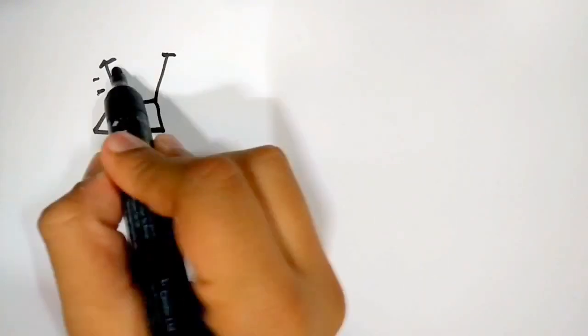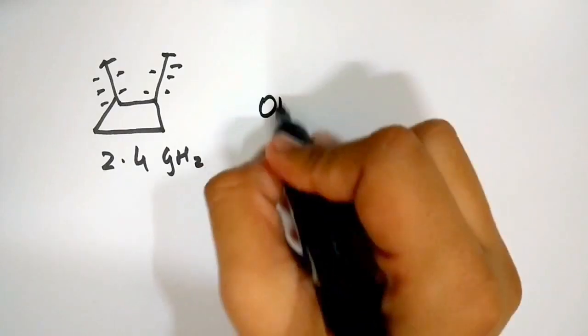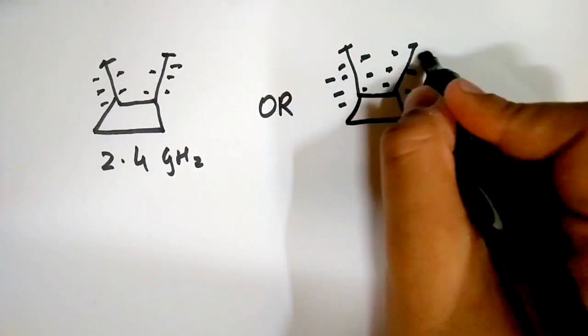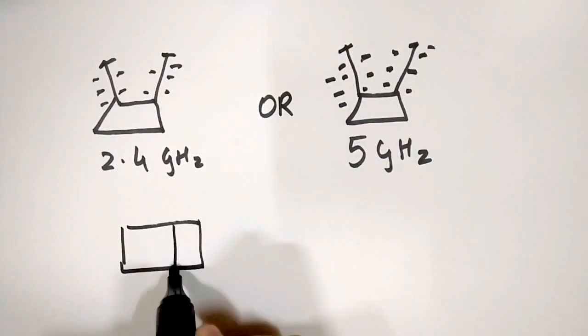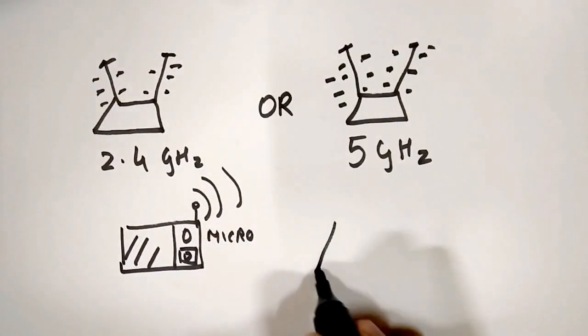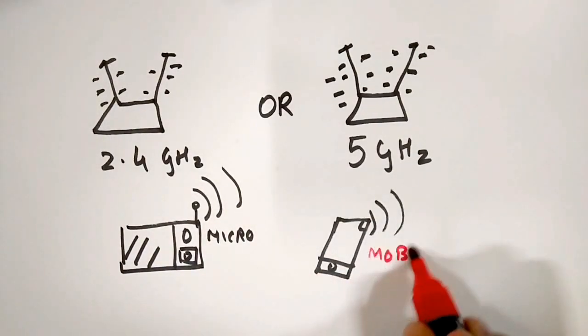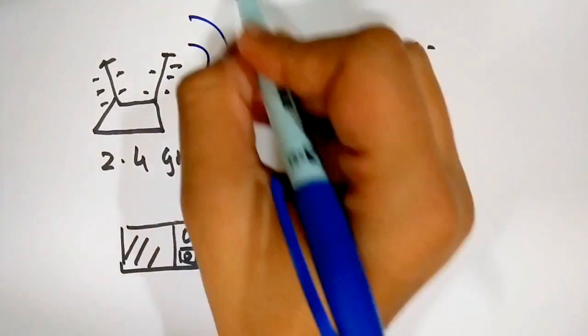The frequency of these vibrations or electromagnetic pulses is generally kept at 2.4 GHz or 5 GHz to avoid interference with electromagnetic waves from other devices like microwaves or mobile networks or even other Wi-Fi networks for that matter.